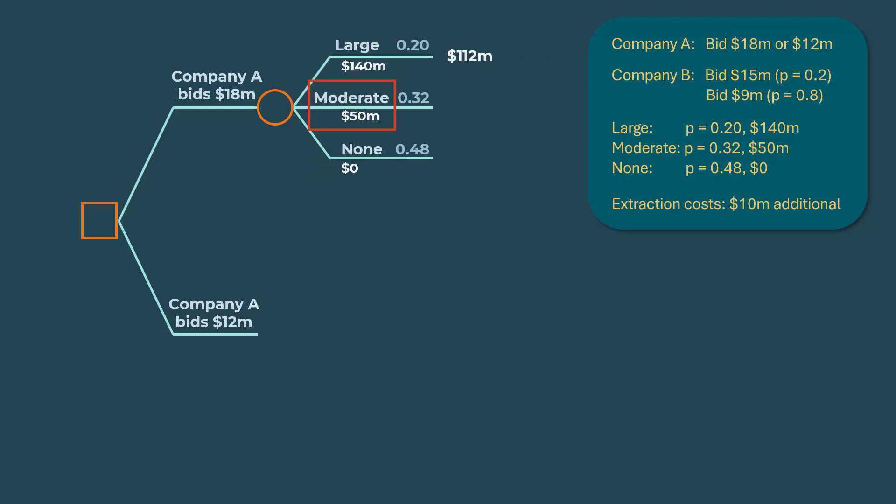For moderate, we have 50 minus 28 which gives $22 million. And for none, we have 0 minus 28 million which gives negative $28 million. We can calculate the expected value for this decision by taking 0.2 times 112 plus 0.32 times 22 plus 0.48 times negative 28. And that gives $16 million.